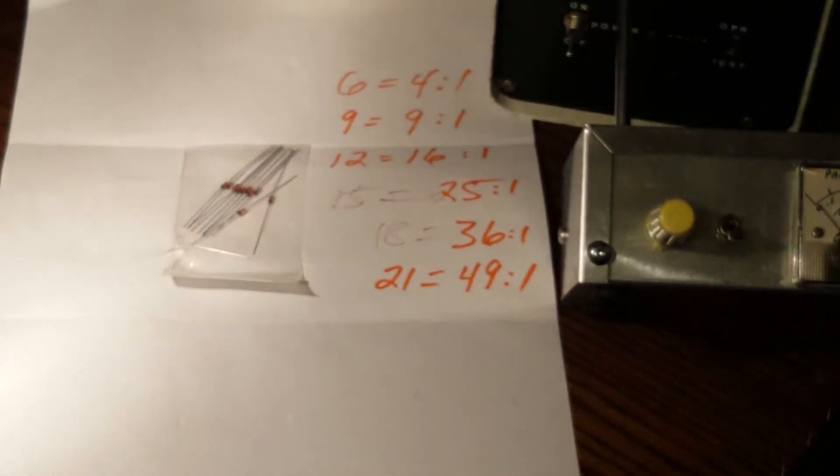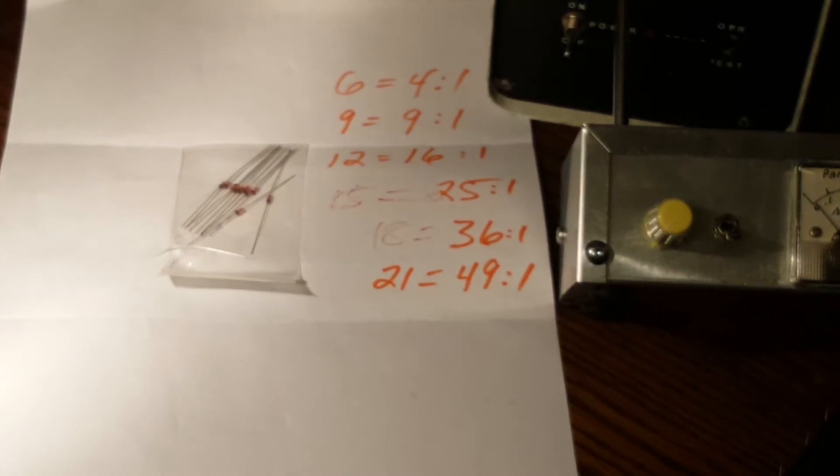So let's swing over here. You can't really see that. That's what I've got. 4 to 1, 9 to 1, 16 to 1, 25 to 1, 36 to 1, and 49 to 1.